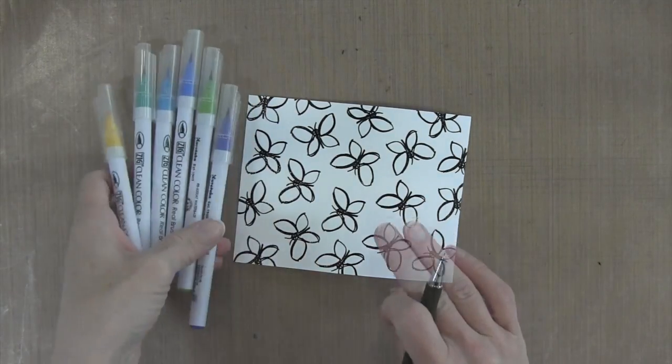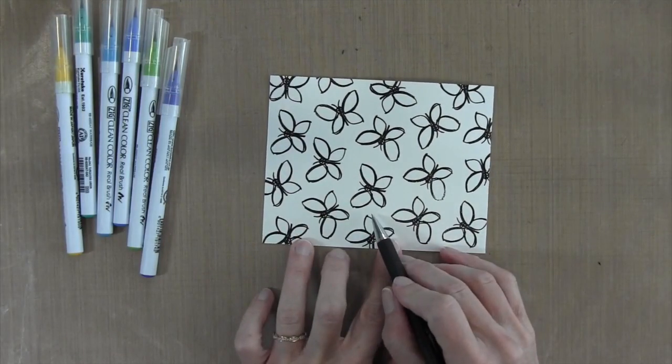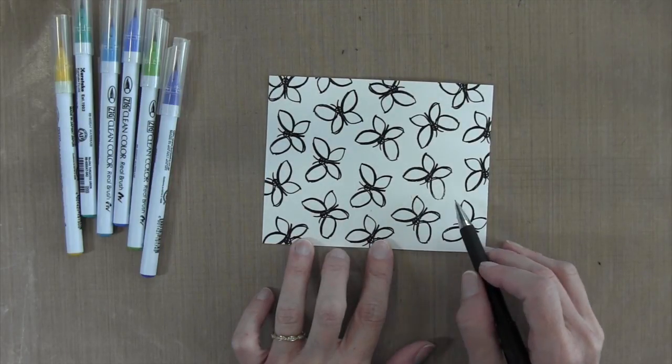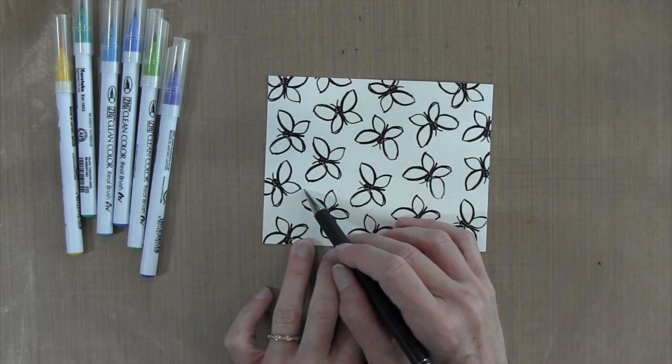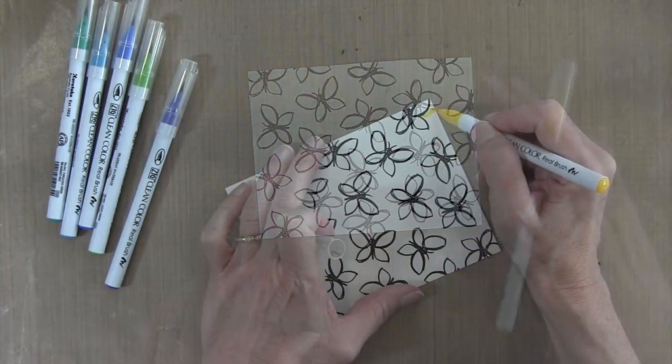Now I'm ready to watercolor. I want to give an equal amount to each color, so I'm going to mark the center and then divide the right side into three parts since I have six markers, then the left side into three parts. I'm just making a very light pencil mark so I know where to start and stop each of the colors.